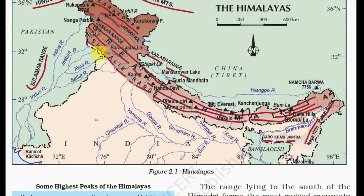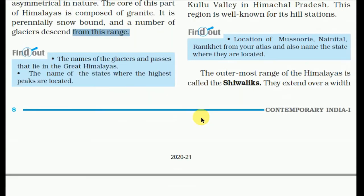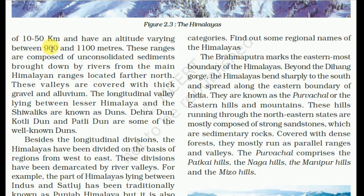The Siwalik is the southernmost range of the Himalaya, and the Karakoram is the northernmost range. The Zaskar range lies between them. The outermost range of the Himalaya is called Siwalik. They extend over a width of 10 to 50 km and have an altitude varying between 900 and 1,100 meters. These ranges are composed of unconsolidated sediment brought down by rivers from the main Himalayan range further north. These valleys are covered with thick gravel and alluvium. The longitudinal valley lying between the Lesser Himalaya and the Siwalik is known as the Duns — the Dehradun and Patli Dun are some well-known duns.